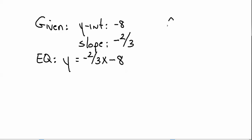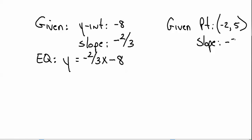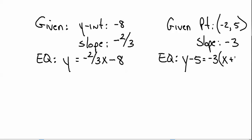Let's say you're given a point and a slope and you're asked to write the equation. You're going to use point-slope form. Remember it's y and then the opposite of the y-value in the point, so it's going to be minus 5, equals the slope times x, and the opposite of the x-value, so that would be plus 2. That's your equation in point-slope form.